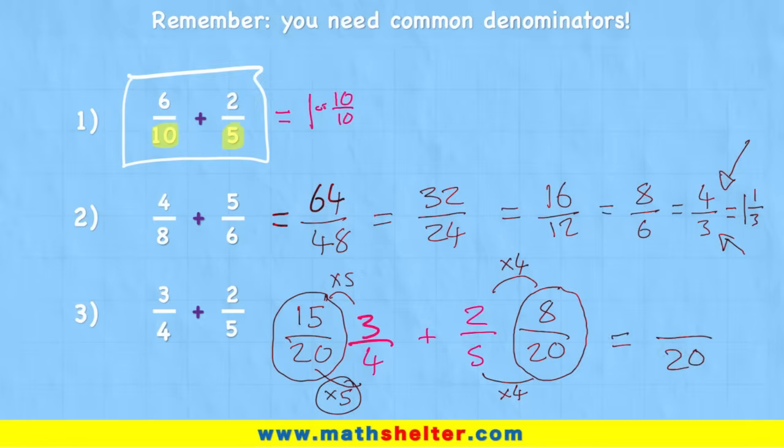Now I just need to add up my numerators, leave my denominator as it is. 15 plus eight is 23. So my answer, 23/20, or in other words, one and three twentieths. Again, that skill there is pretty challenging. Look for it if you want to.